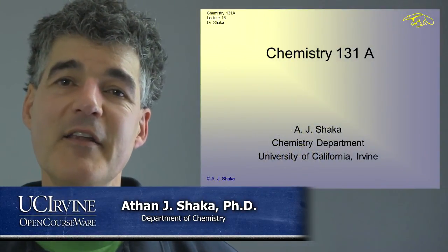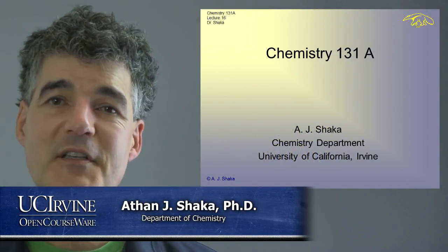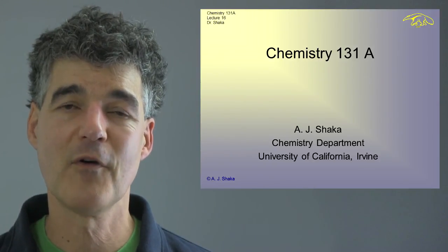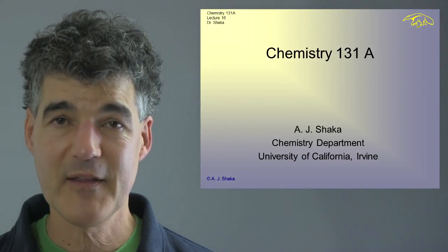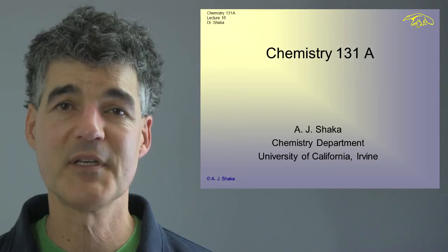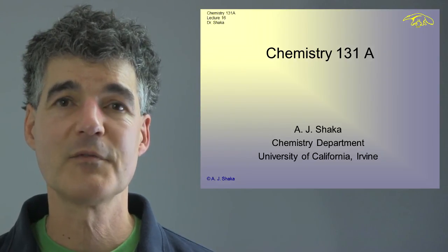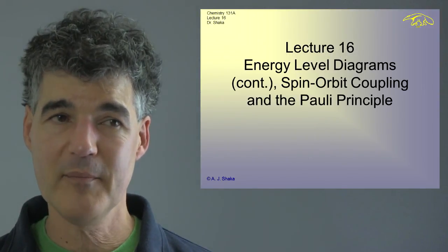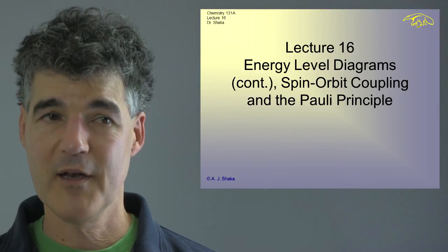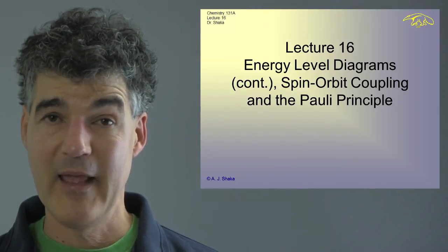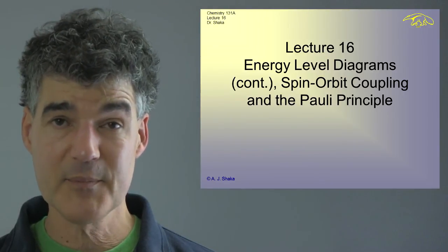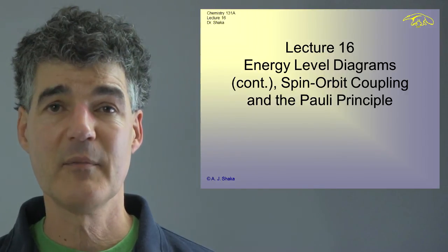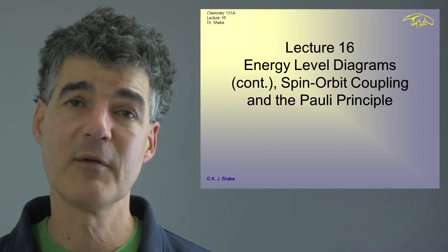Today we're going to continue on that infamous cesium problem. We had all those transitions that we were supposed to assign quantum numbers for, and we were asked if we could estimate the ionization energy or ionization potential. Today we're going to finish the energy level diagram problem, talk about spin-orbit coupling, and then introduce multiple electron atoms and the Pauli principle as an introduction to more complicated systems.